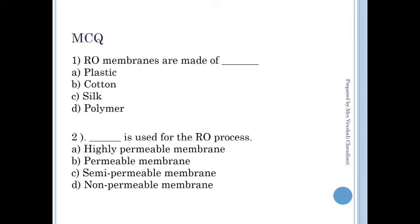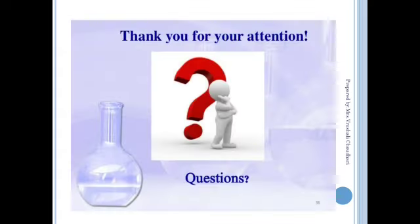Now some MCQs. First: RO reverse osmosis membranes are made up of — plastic, cotton, silk, or polymer? The answer is polymer. Second: What is used for the RO process — highly permeable membrane, permeable membrane, semi-permeable, or non-permeable? The answer is semi-permeable membrane, which is made from polymers or polyamides. Thank you so much for your attention; if you have any doubts you can ask me during the online lectures.